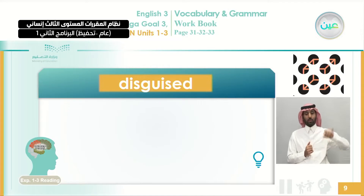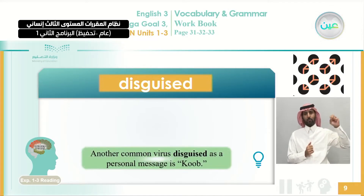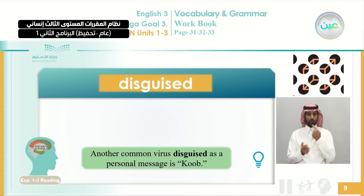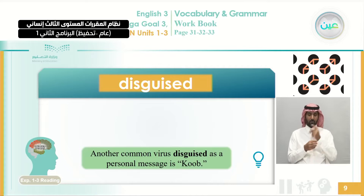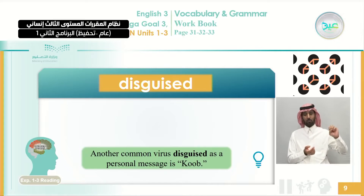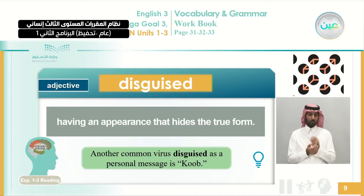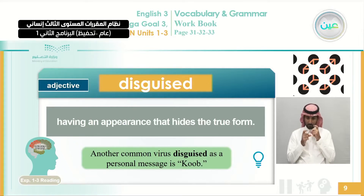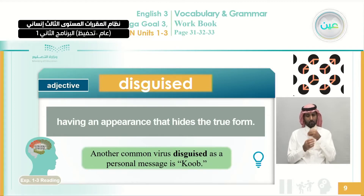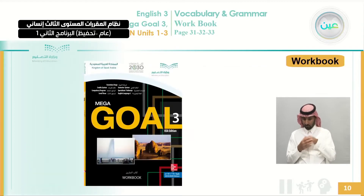Here we talk about disguised. How can we tell what a disguise is? Let's read it in context: another common virus disguised as a personal message is Kub. We can define disguised as having an appearance that hides the true form. We cannot see it because it is disguised.